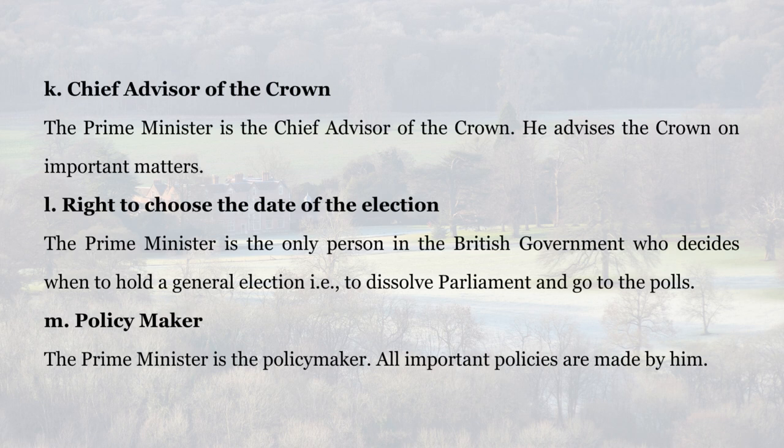K. Chief Advisor of the Crown: The Prime Minister is the chief advisor of the Crown. He advises the Crown on important matters. L. Right to Choose the Date of the Election: The Prime Minister is the only person in the British Government who decides when to hold a general election — that is, to dissolve Parliament and go to the polls.